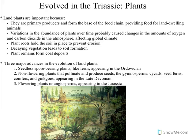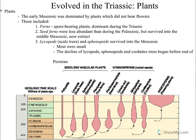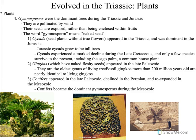We see three major advancements of land plants. As we saw in the Paleozoic, we have our seedless spore-bearing plants which come first, then our non-flowering seed plants, and then our flowering plants come around in the Mesozoic as well. The early Mesozoic was dominated by plants that did not have flowers — true ferns, which are spore-bearers, seed ferns, lycopods (those scale trees that are really tall but really skinny), and gymnosperms, which are very dominant throughout the Triassic and Jurassic.